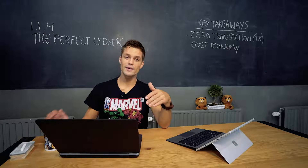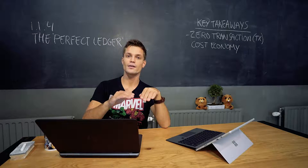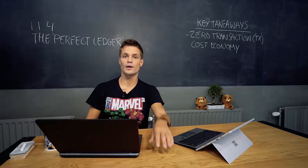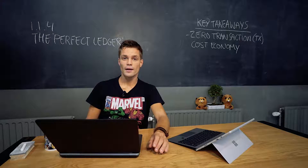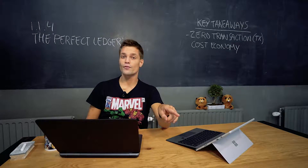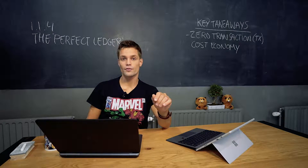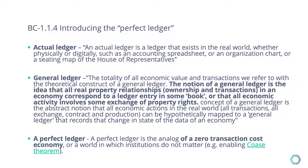Humanity keeps striving to improve their current ledger. As mentioned, ledgers evolve and society evolves. But in our strive towards a perfect ledger, we first need to define what a perfect ledger is. There are some very interesting articles you can find in the further reading, which give some properties of a perfect ledger.